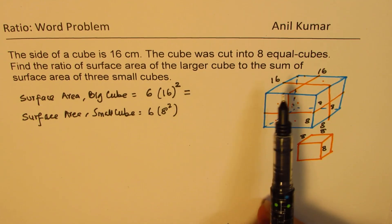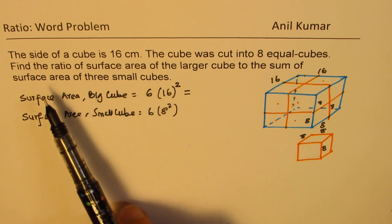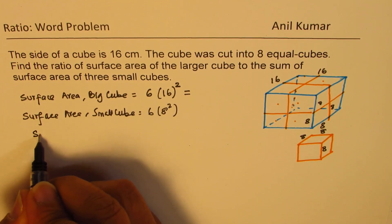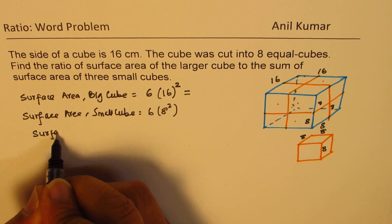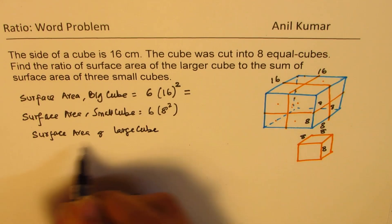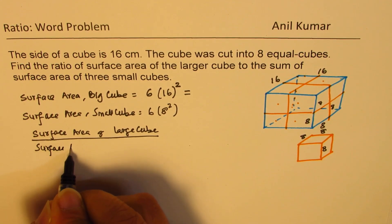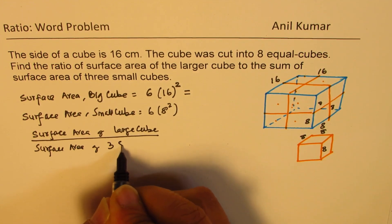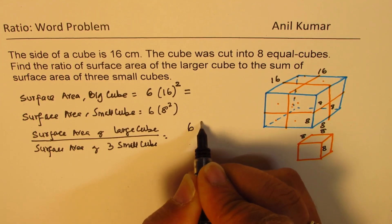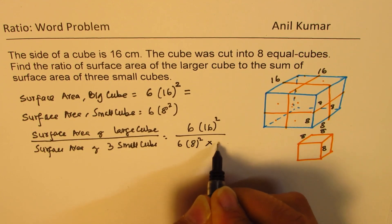What do we need to compare here is find the ratio of surface area of large cube to the sum of surface area of three small cubes. So if I have to find ratio of surface area of large cube divided by surface area of three small cubes, then what we get here is six times 16 squared divided by six times eight squared times three.